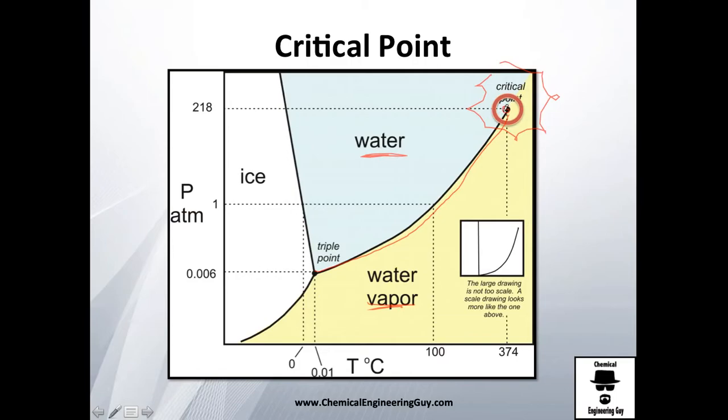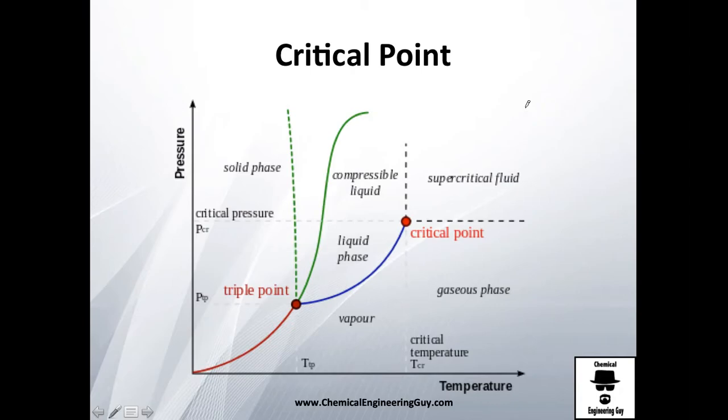You see how it cannot continue, even though in this diagram they have a separate green and yellow. Well, that's not the point. Actually, this is compressible liquid here, this is gas phase, this is vapor. We're going to see vapor in the next video, the difference between these two guys.